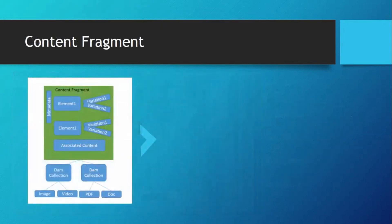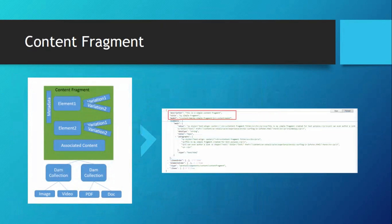Let us see what is the structure of a content fragment. A content fragment has metadata and various elements with its variations. It gets associated with content which has DAM collections and image, video, PDF, document, etc. A content fragment output can be rendered as a JSON format. This is one example.